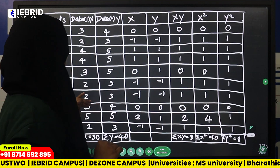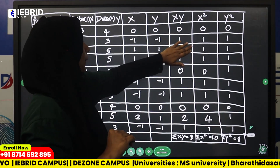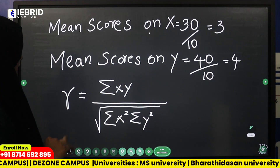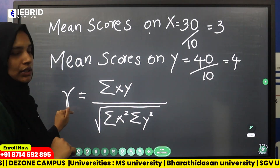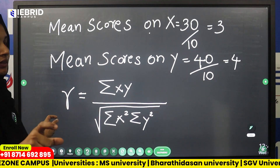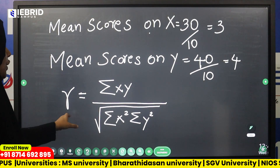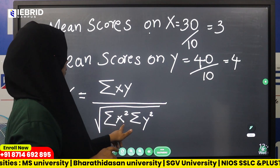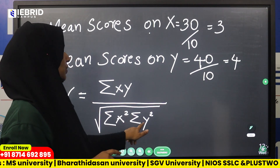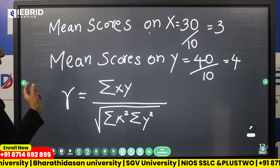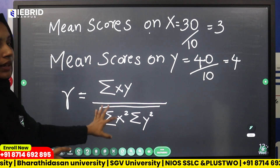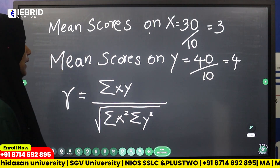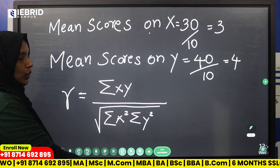The next step is to calculate xy, x², and y². We will apply the equation for Pearson's Product Moment Correlation: r is equal to summation xy divided by the square root of summation x² multiplied by summation y². To do this calculation we need xy, x², and y².